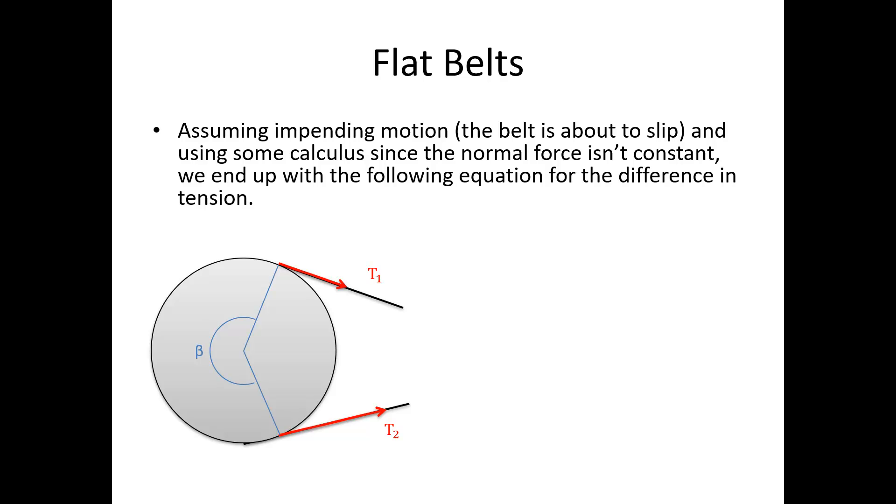In that case, if we are in contact with the outside surface and assuming impending motion where the belt is about to slip, we adjust T1 and T2. T1 is the smaller tension, T2 is the bigger tension. If we assume impending motion, the friction force is the normal force times mu static. Skipping through some calculus, because the normal force is not constant, we integrate around the circular arc of contact. We find that T2 max is equal to T1 times e to the mu static times beta.